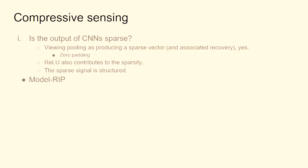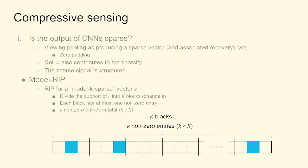That suggests instead of using generic RIP machinery, we should use something called the model RIP sparsity and build in the structure of the sparsity. Model RIP says: if you have a model for the structured sparsity in your vector, then your matrix satisfies RIP if it's a near-isometry on those model sparse signals. Instead of looking at any k-sparse vector z and phi times z, I should look at only those vectors z satisfying this certain model sparsity. I have k blocks, k nonzero entries, at most one per block.